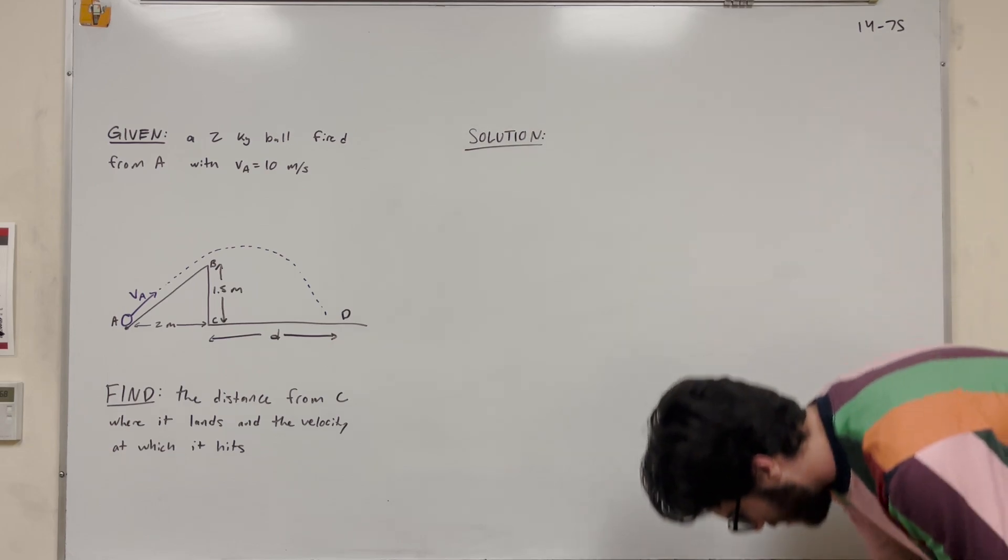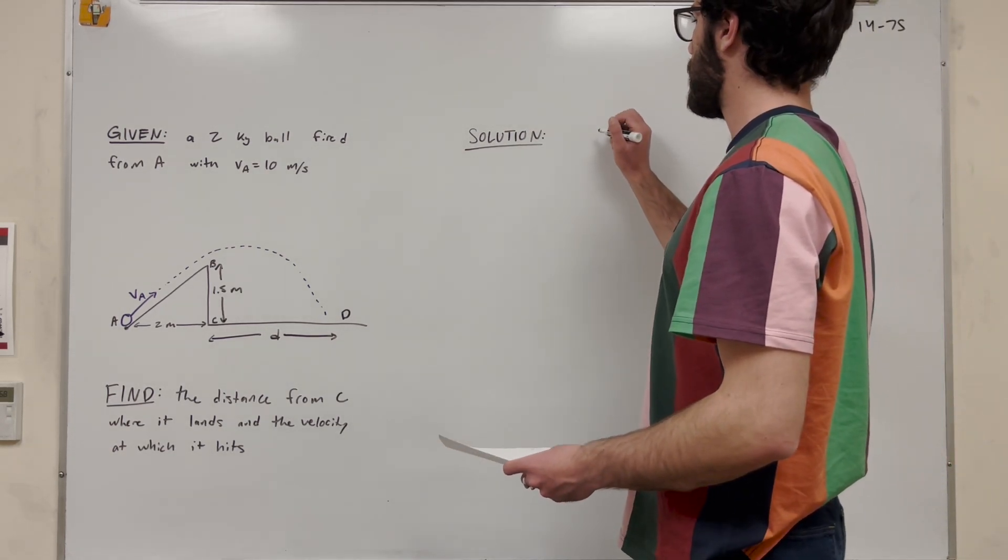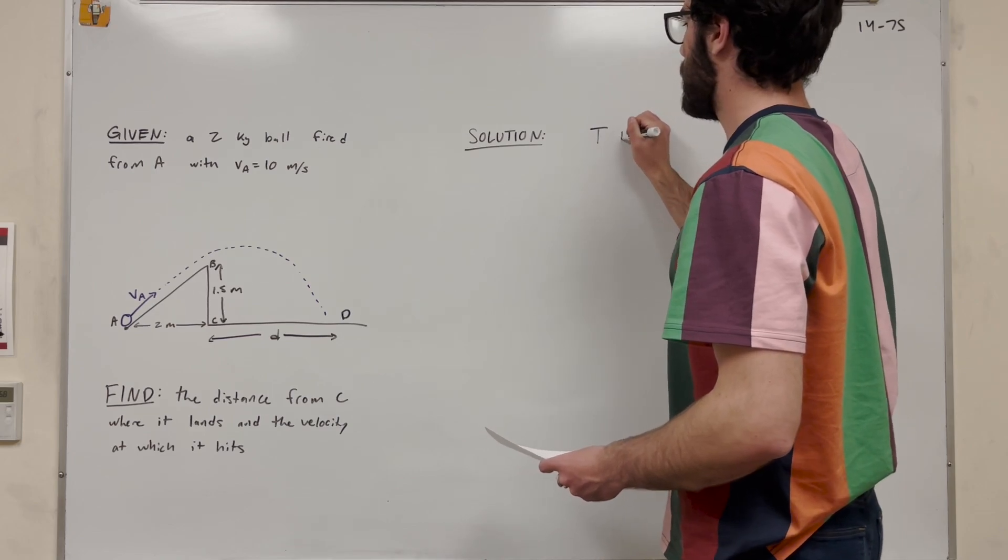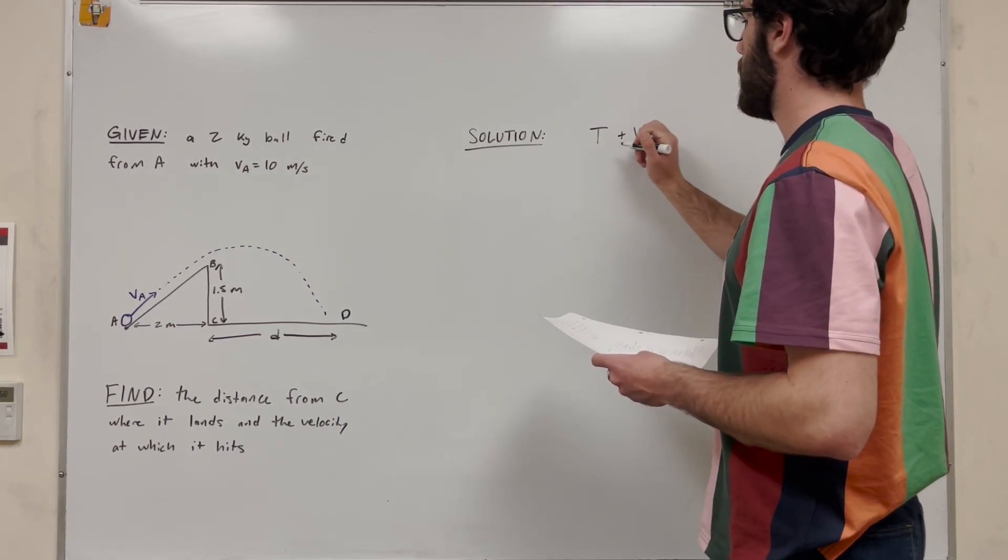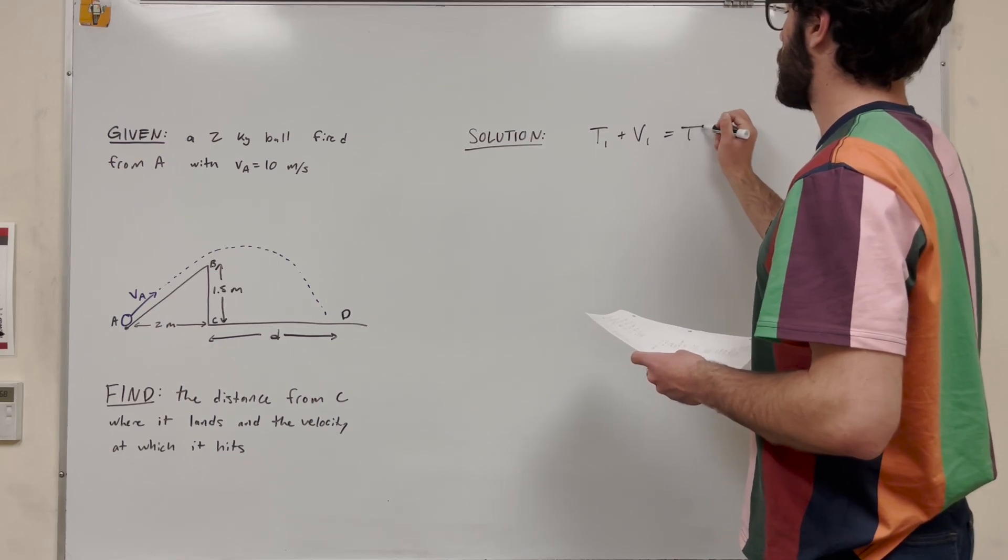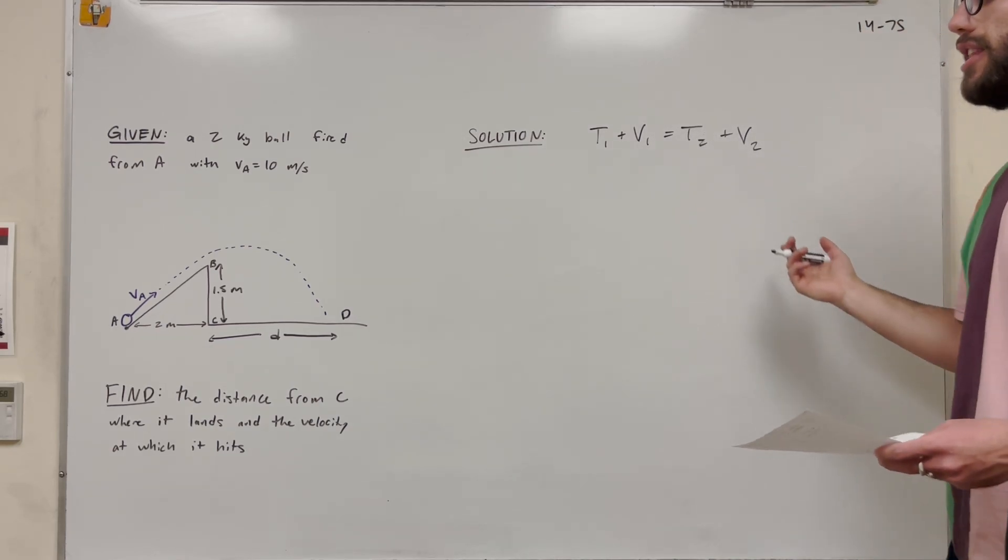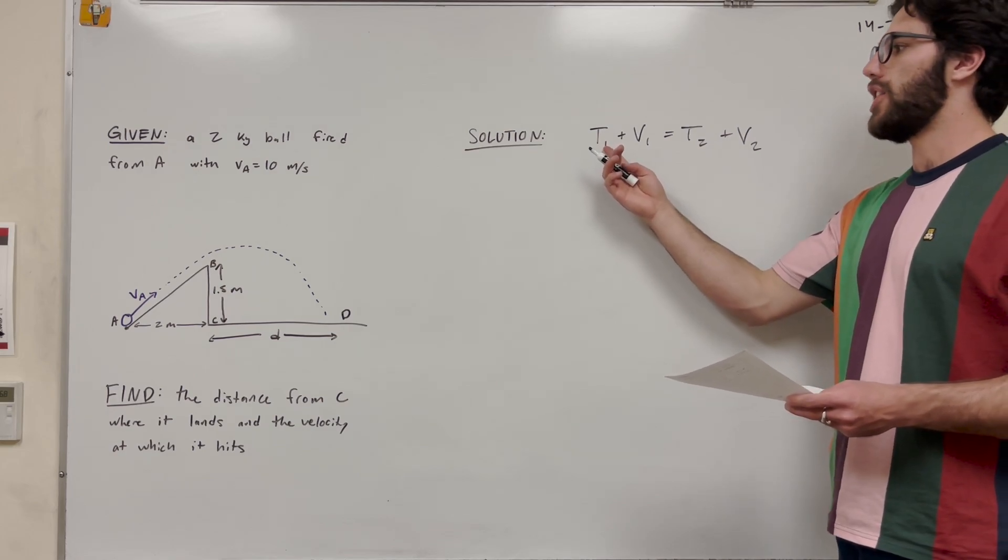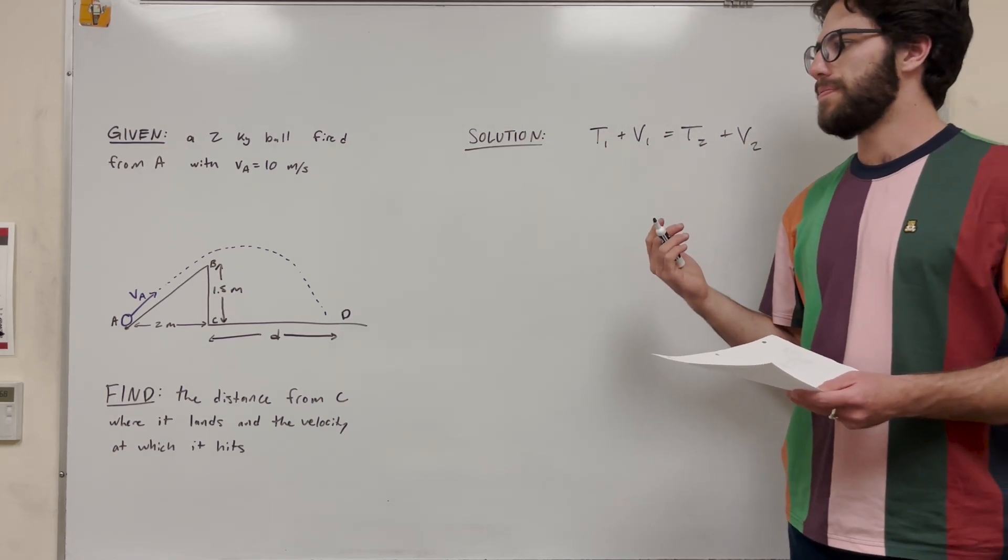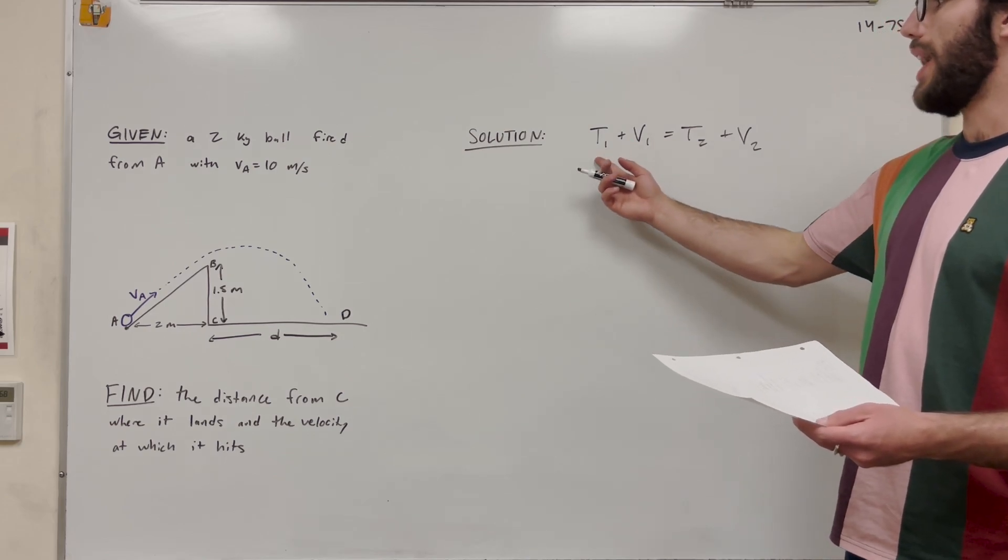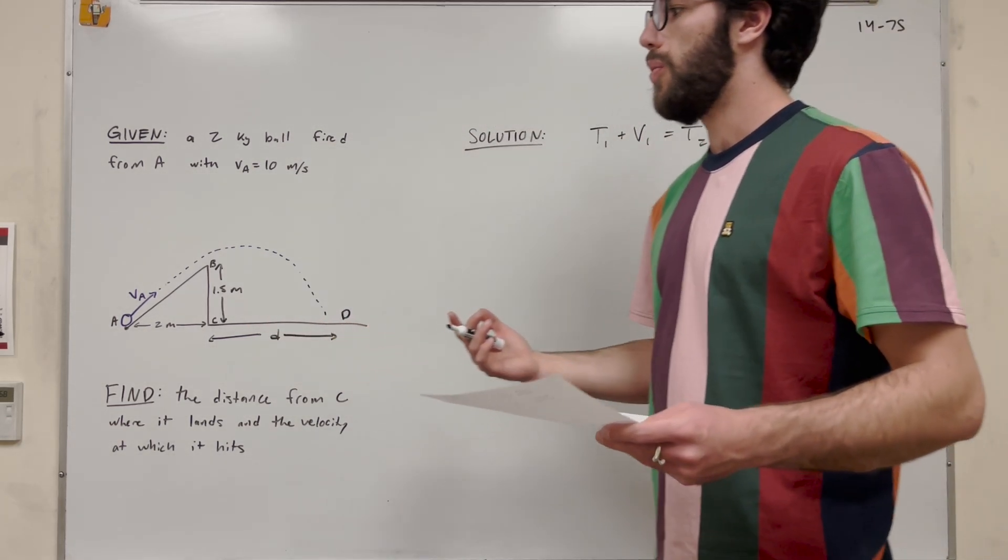So the first equation we're going to use is the conservation of energy equation. And so this could be written as T, which is our initial energy, plus our initial potential energy, is equal to our final kinetic energy plus final potential energy. This is how it's written in the book, but it's just saying kinetic energy plus potential energy is going to be conserved throughout that. So initially, we have kinetic energy, but we're starting at a low point. So first of all, what are we going to analyze?